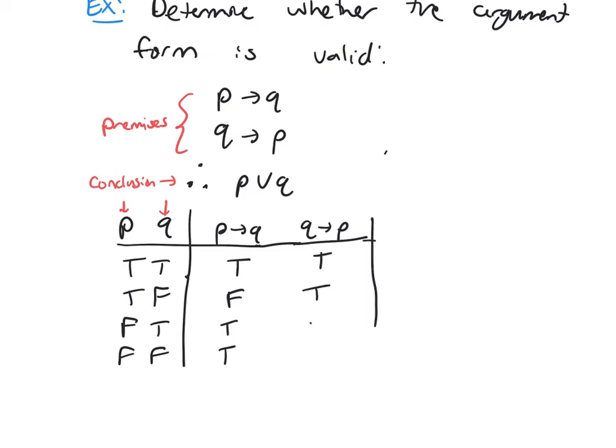True, false, so that would be false. Q is false, automatically true.